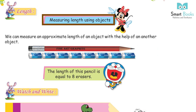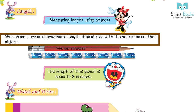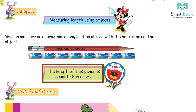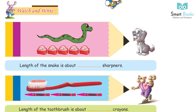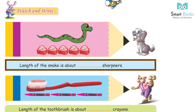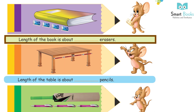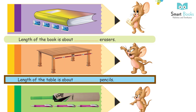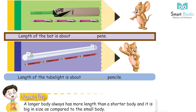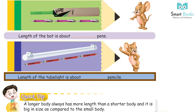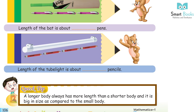Measuring length using objects. We can measure an approximate length of an object with the help of another object. The length of this pencil is equal to 8 erasers. Watch and write: Length of the snake is about dash sharpeners. Length of the toothbrush is about dash crayons. Length of the book is about dash erasers. Length of the table is about dash pencils. Length of the bat is about dash pans. Length of the tube light is about dash pencils.